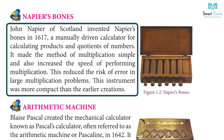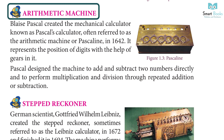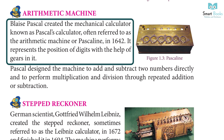Napier's Bones: John Napier of Scotland invented Napier's Bones in 1617 — a manually driven calculator for calculating products and quotients of numbers. It made the method of multiplication simple and also increased the speed of performing multiplication. This reduced the task of error in large multiplication problems. This instrument was more compact than earlier creations.